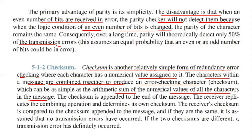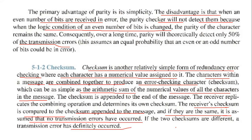The receiver replicates the combining operation and determines its own checksum. The receiver's checksum is compared to the checksum appended to the message. If they are the same, it is assumed that no transmission errors occurred. If the two checksums are different, a transmission error has definitely occurred.